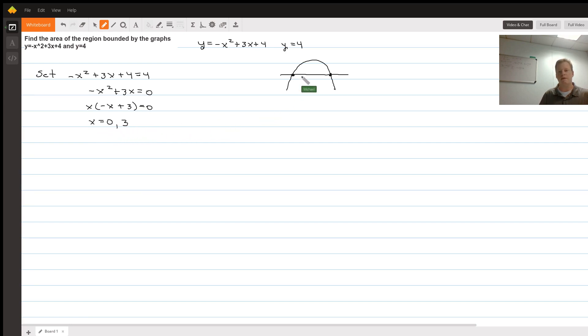Or 3. So this intersection will be at 0 and this one will be at 3. To find the area between the curves, I am going to integrate from 0 to 3 and take the top curve negative x squared plus 3x plus 4 and subtract the lower curve which is just 4. The 4s are going to cancel leaving me just negative x squared plus 3x.